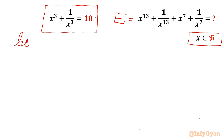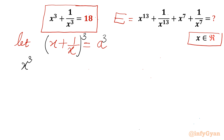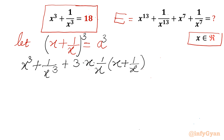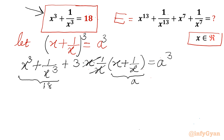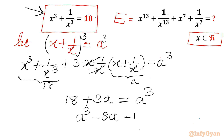I will consider the substitution x plus 1 over x equal to a. Let us take cubing both sides and apply the (a + b) whole cube identity. So we get x cube plus 1 over x cube plus 3 times x times 1 over x, in bracket x plus 1 over x, equals a cube. Since x plus 1 over x is a and x cube plus 1 over x cube is 18, we can frame the equation 18 plus 3a equal to a cube, or a cube minus 3a minus 18 equal to 0.